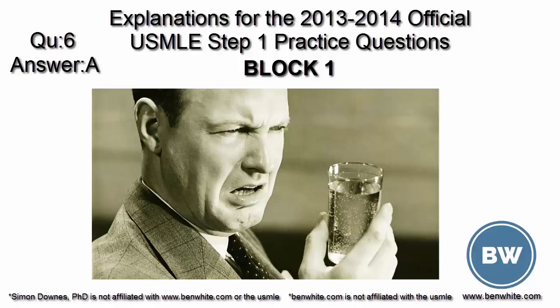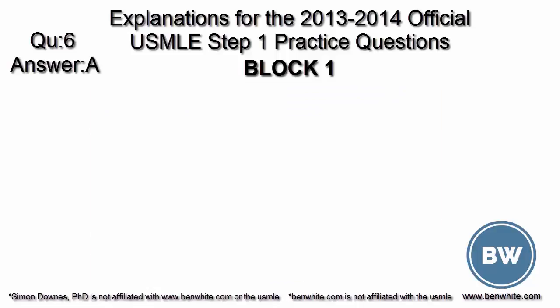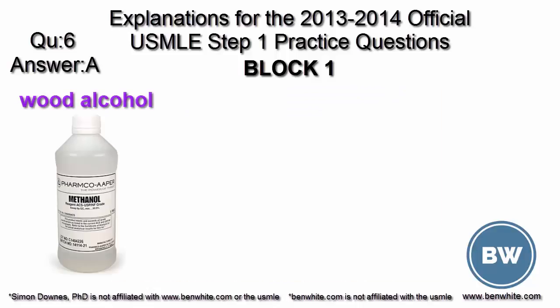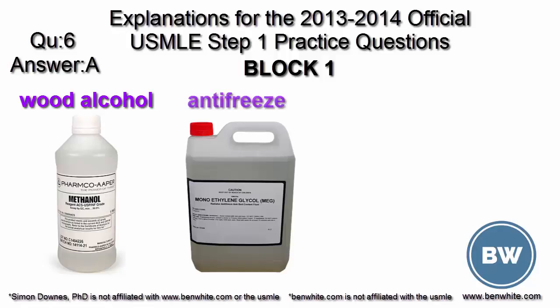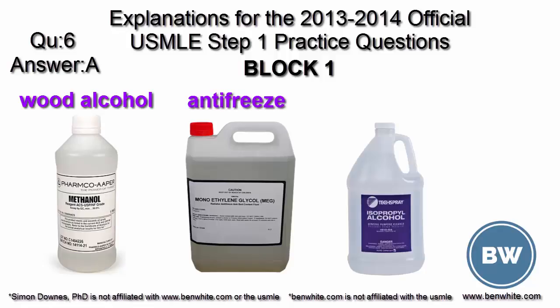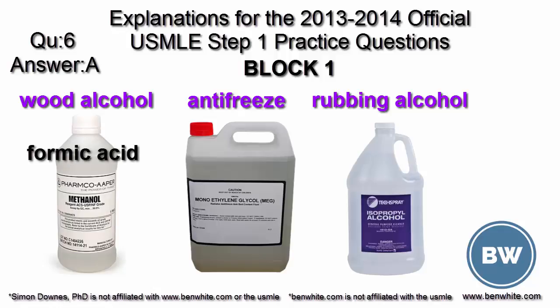Naughty alcohols — methanol (wood alcohol), ethylene glycol (antifreeze), and isopropyl alcohol (rubbing alcohol) — cause terrible damage through their metabolites. Formic acid from methanol, oxalic acid from ethylene glycol, and acetone from isopropyl alcohol.